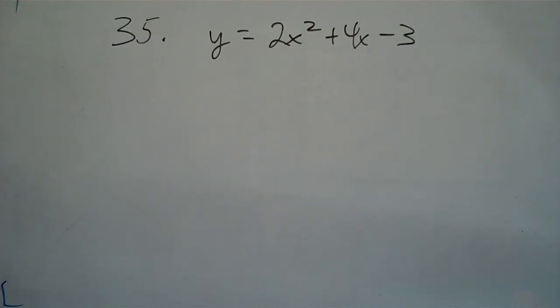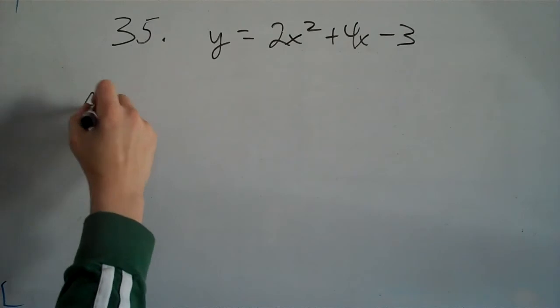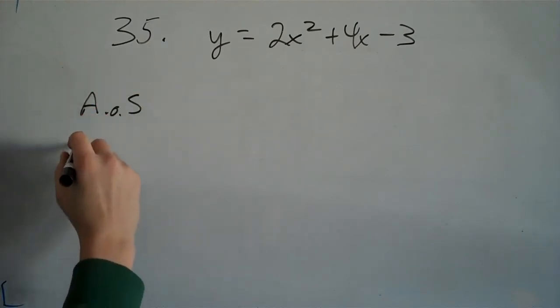For number 35, you're asked to find the missing information. We need to find two things: the axis of symmetry, and we need to find the vertex.